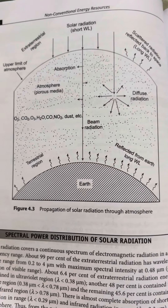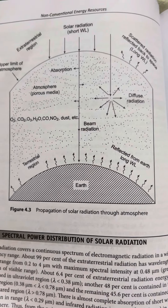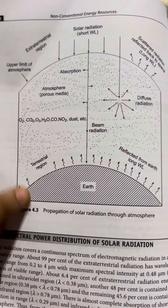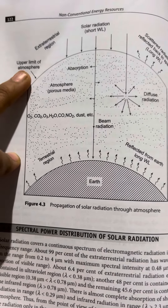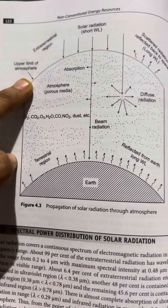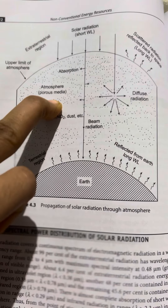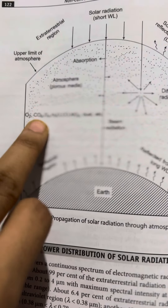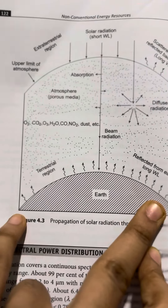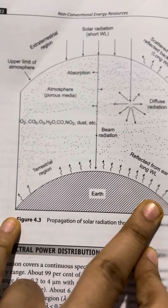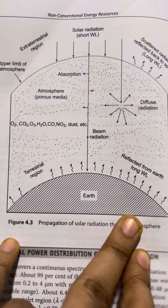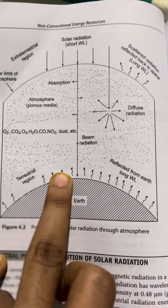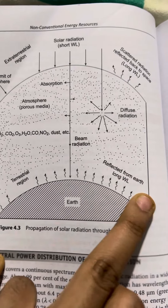Solar radiation passes through the atmosphere. There are two regions: one is extraterrestrial and the upper limit. The atmosphere causes absorption by gases like O2, CO2, O3, H2O, and CO. This is the beam radiation reflected from the Earth.